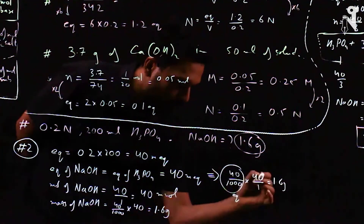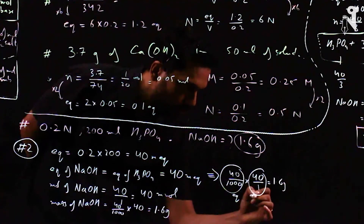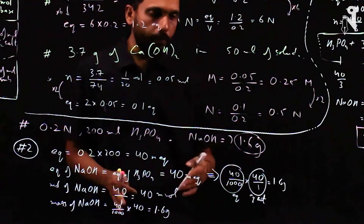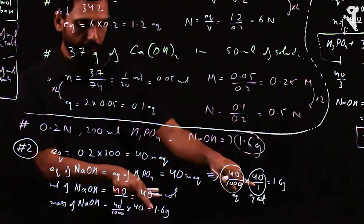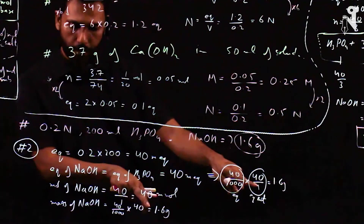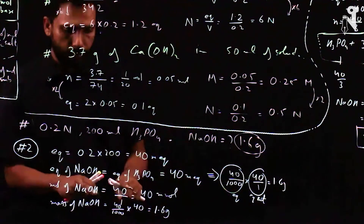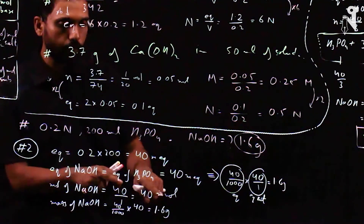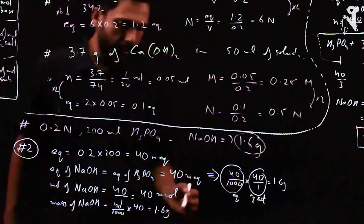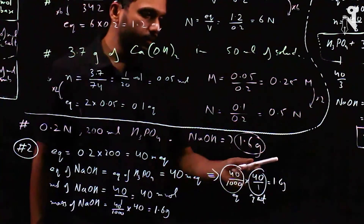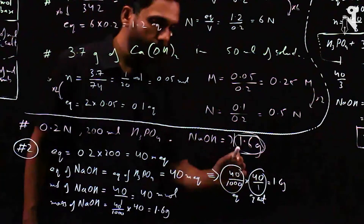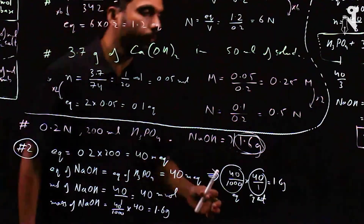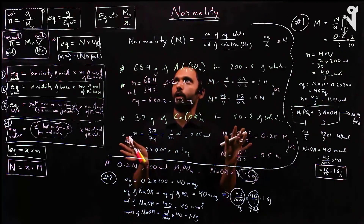The key advantage of Method 2 using equivalents is that we never needed to write a balanced reaction. Both methods give 1.6 grams of NaOH. That concludes the topic of normality.